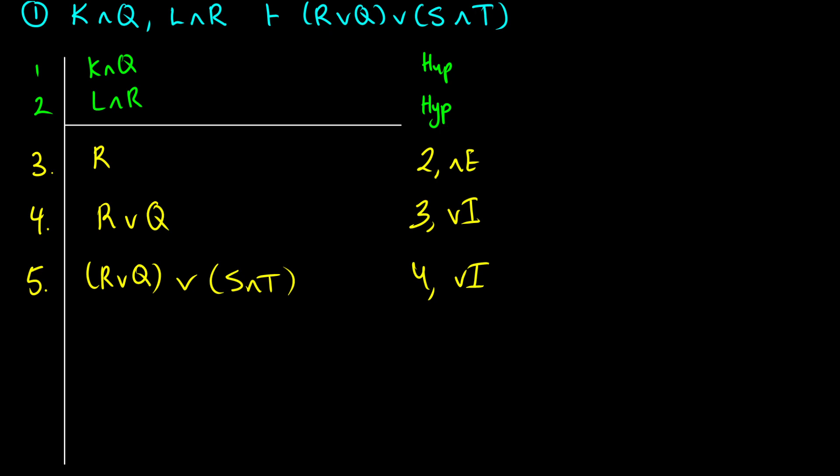So the reason this works is because if we think about the truth values of this well-formed formula, we just have to have one of these things that are true. Either R has to be true, Q has to be true, or S and T has to be true.